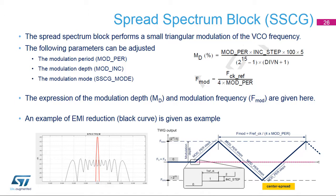The modulation frequency is generally in the range of 20 to 50 kHz, and the modulation depth is around 1%. Spreading the frequency over a limited band spreads the signal power over that band, reducing the peak power. The red signal shows the VCO output without SSCG, and the black signal shows the VCO output with SSCG.